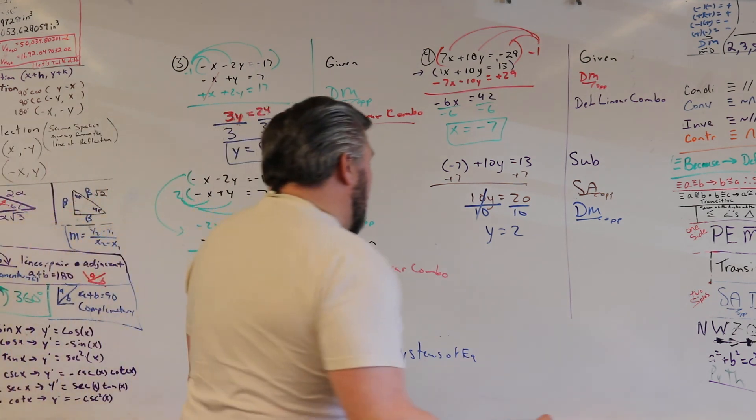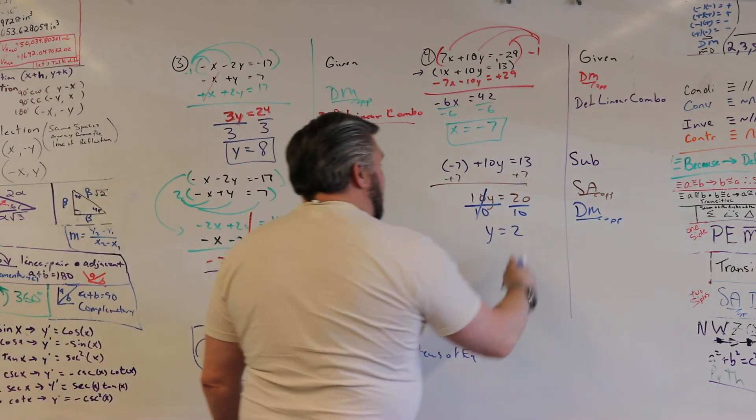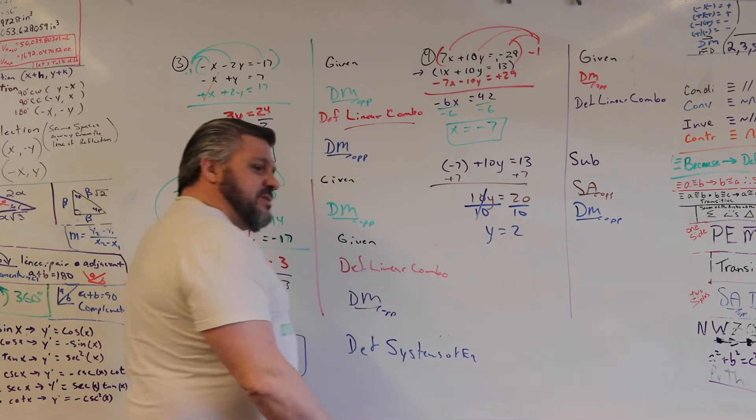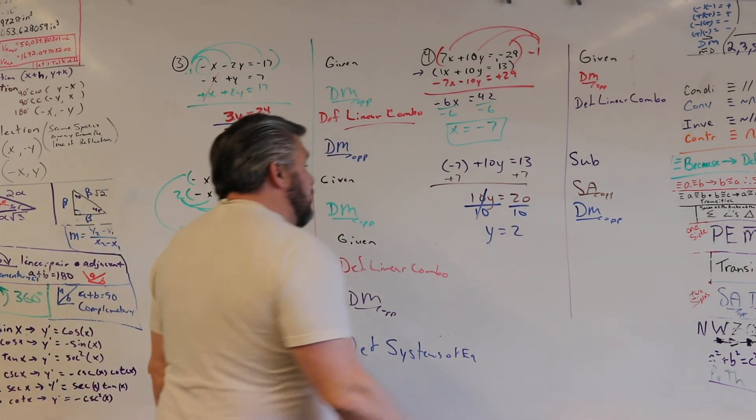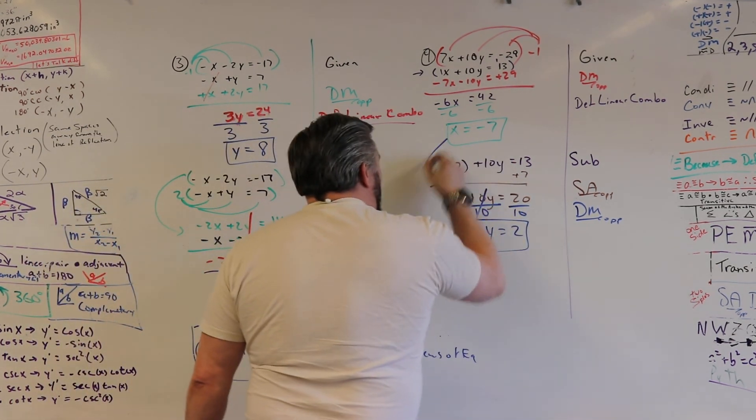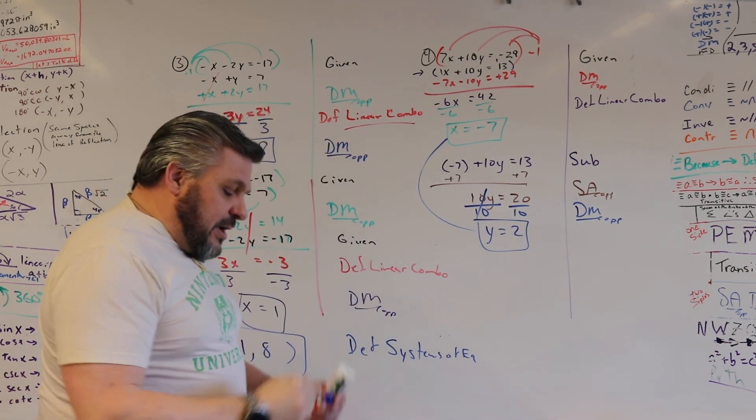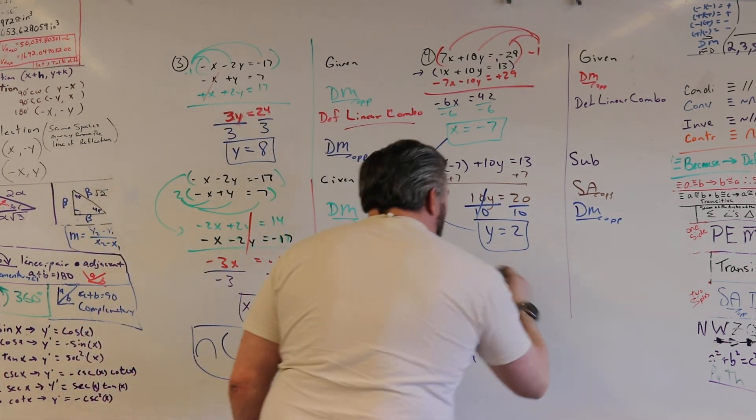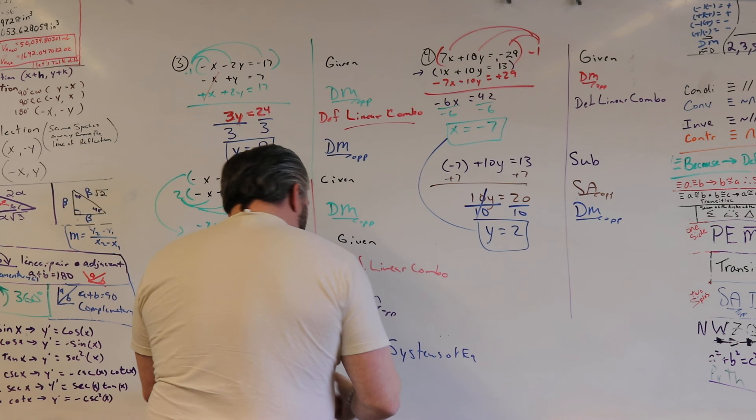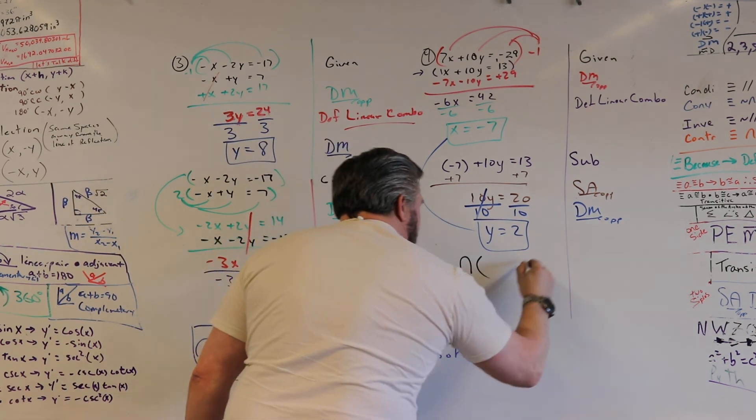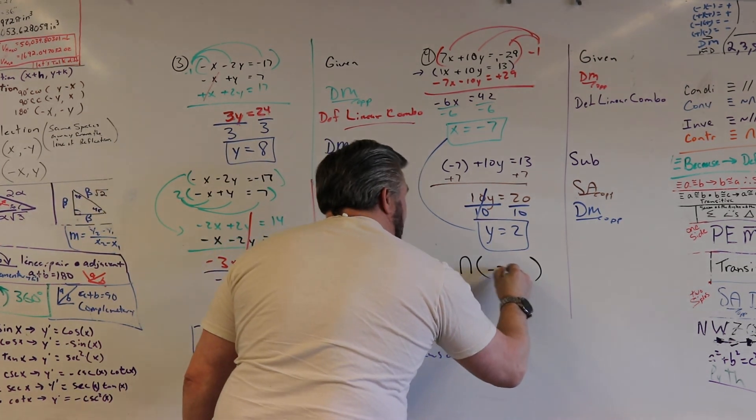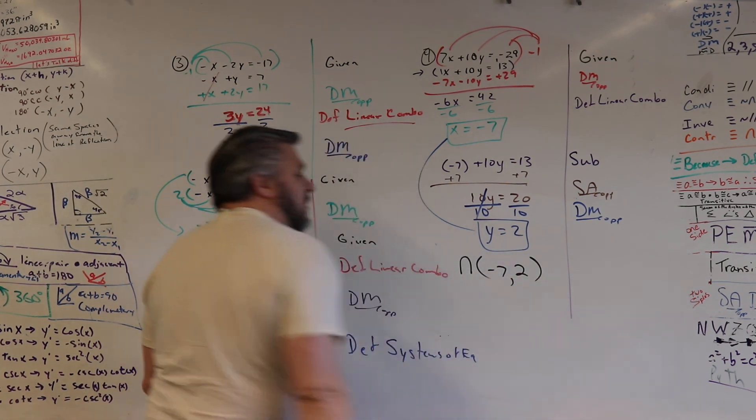Okay, alright, so pretty easy. 20 divided by 10 is 2, right? So I know x and I know y, right? So how am I going to write them? The intersection is negative 7 and 2. Good job.